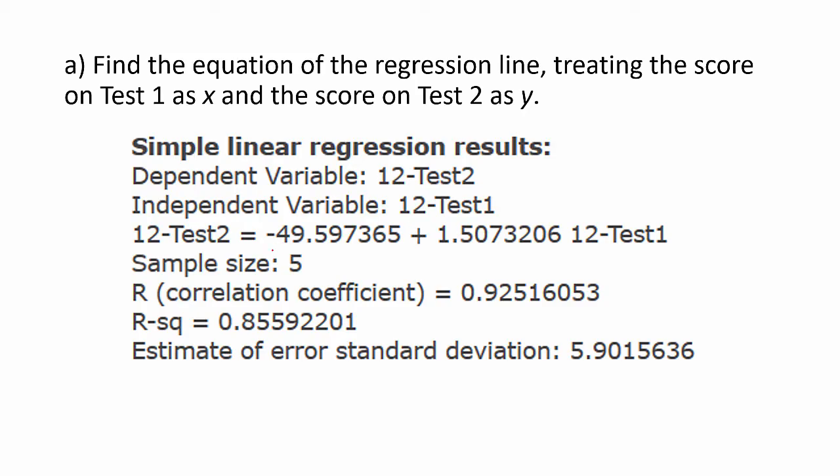Here are those results once again. The equation is the third line in the results. And if we round to two decimal places, we can write this equation as y hat equals negative 49.60 plus 1.51x. You may find it easier, though, to write this as test two equals negative 49.60 plus 1.51 test one.